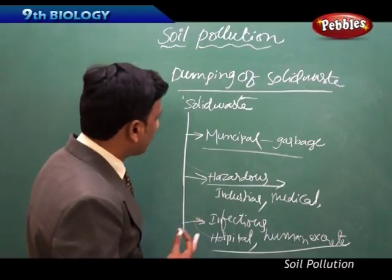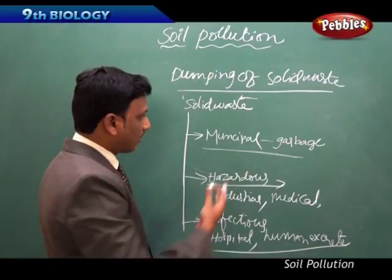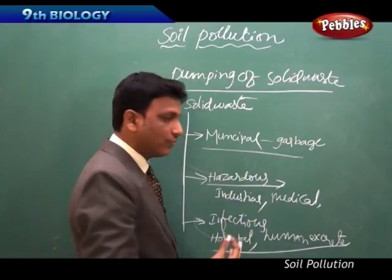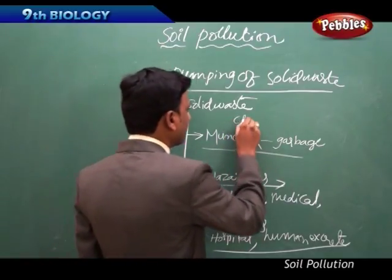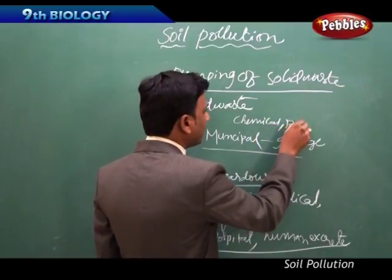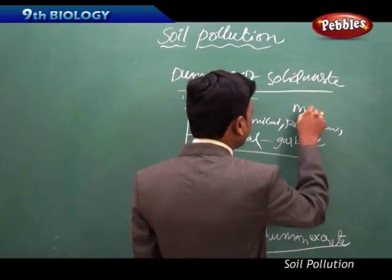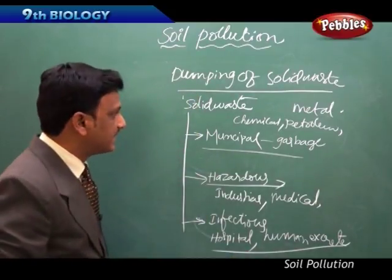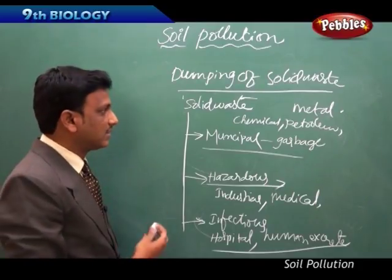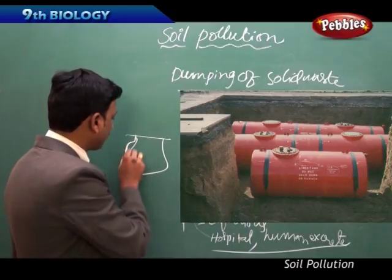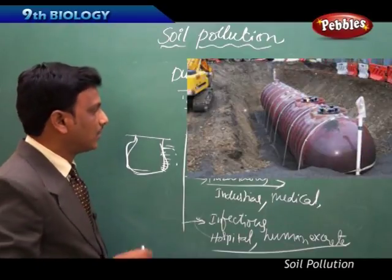Among these solid wastes, the most dangerous are those that are non-degradable. Chemical waste from chemical industries, petroleum industries and their products, and metal industries - these three produce very dangerous waste which does not degrade easily. Certain chemicals are stored in underground tanks, and from these underground tanks they seep, percolate, and ooze out, mixing with the soil and creating a lot of problems.